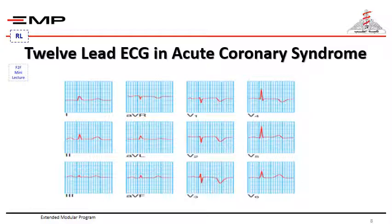In non-ST segment elevation acute coronary syndromes, there is partial occlusion of a major vessel or complete occlusion of a minor vessel, causing either unstable angina or partial-thickness (non-transmural or subendocardial) myocardial infarction. This is usually associated with ST segment depression and T wave changes, and in the presence of infarction there may be some loss of R waves in the absence of Q waves.